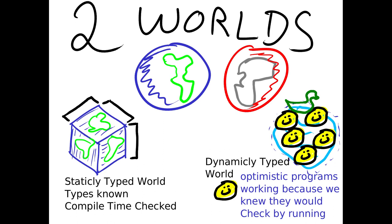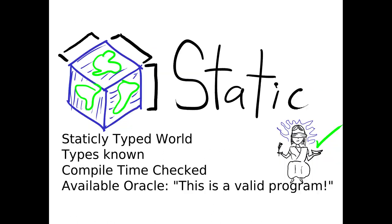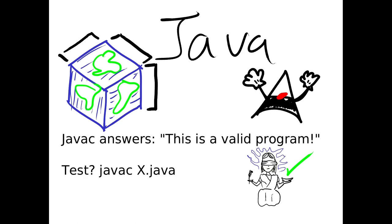Usually our language models are going to be basically 10+ gram models and we're going to use some kind of smoothing and we're going to use surprise or cross entropy or perplexity. We're going to operate in two worlds: a statically typed world where things can be compile-time checked, and a dynamically typed world where we optimistically code because we think it's faster. In our static world, our types are known and we have access to oracles. Oracles can tell us that something is a valid program. For instance, Java's oracle would be javac.